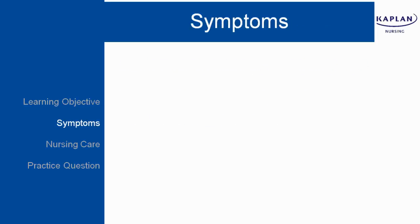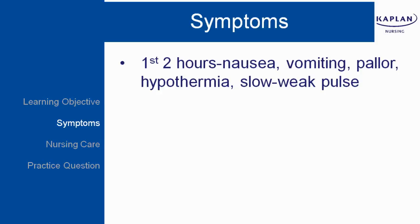Let's begin with the symptoms, or the assessment, of a client with acetaminophen poisoning. During the first two hours, you can see nausea, vomiting, pallor, hypothermia, and a slow, weak pulse.